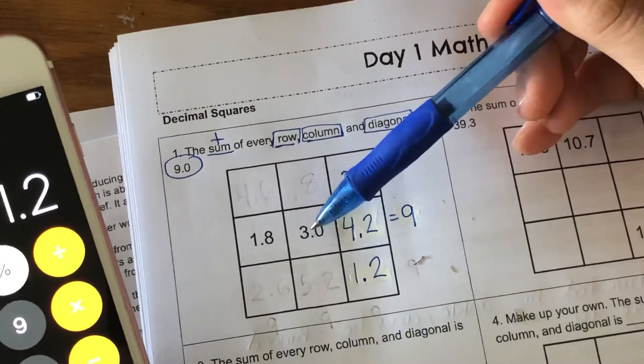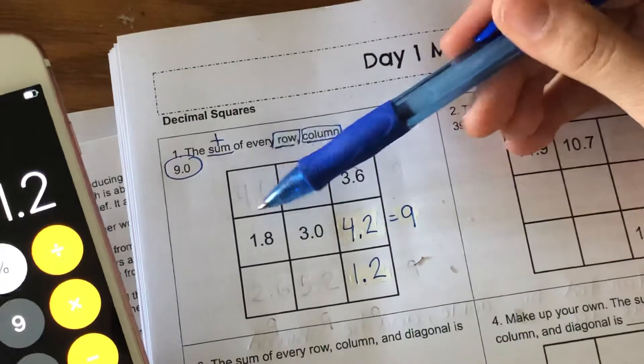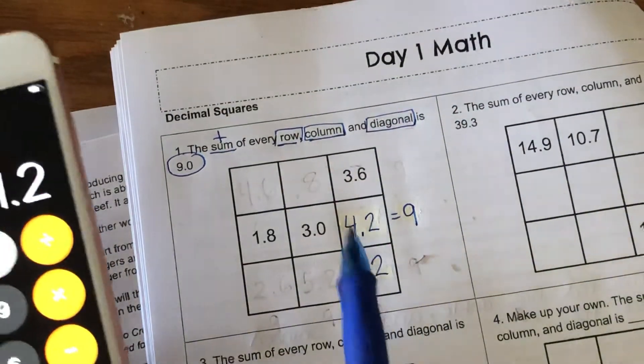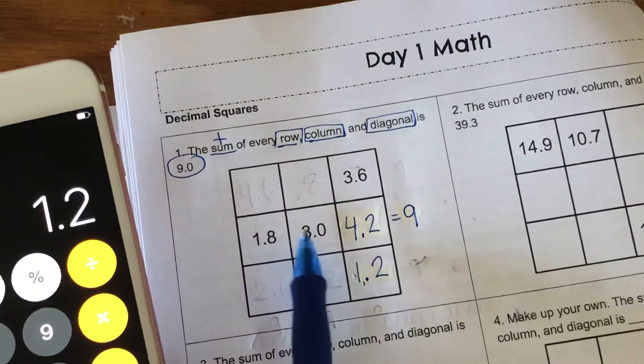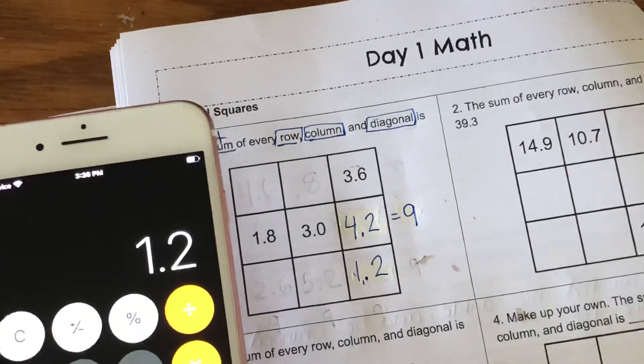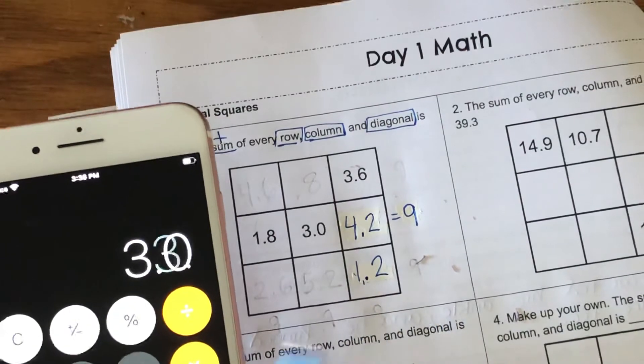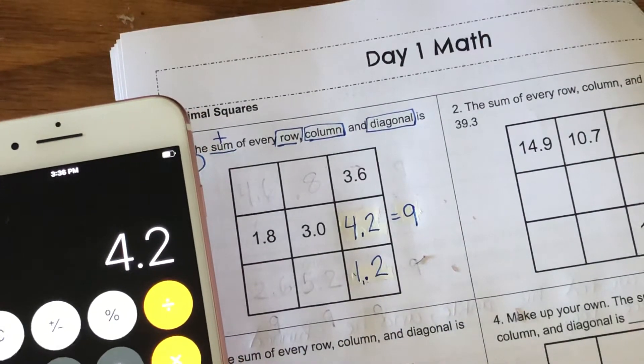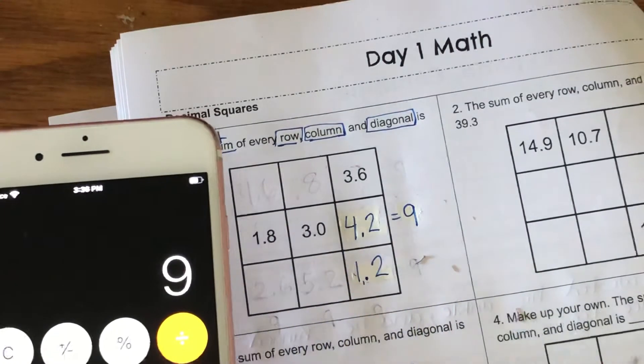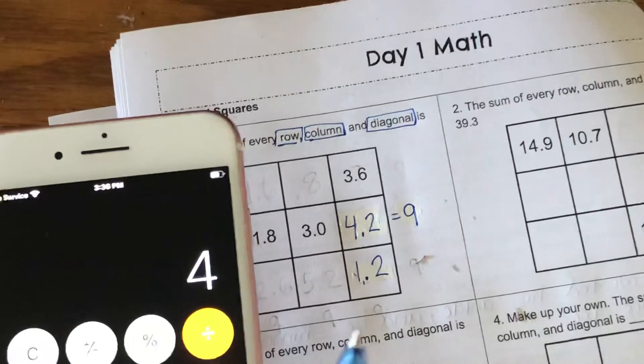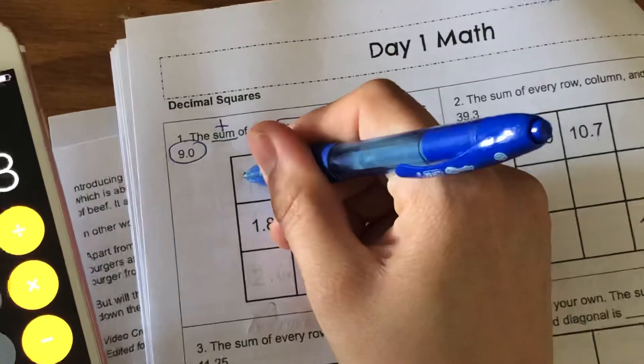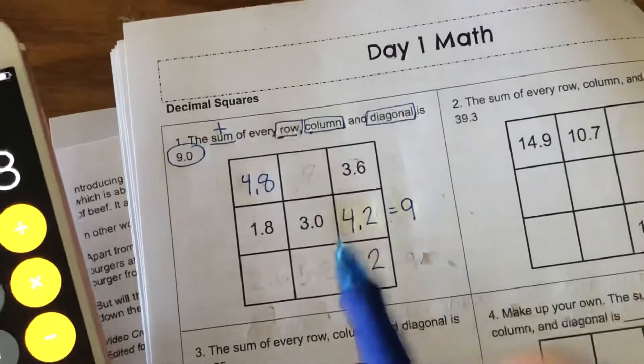Now I'm gonna go ahead and look at the diagonal one. I have two of my three. I need to figure out what this is. I'm gonna add these two numbers together and subtract the sum from 9. So 1.2 plus 3.0 is 4.2. Now I need to take this away from 9. Nine take away 4.2, and I have 4.8. You can see as you answer these, you're starting to simplify and take away boxes to make it easier.